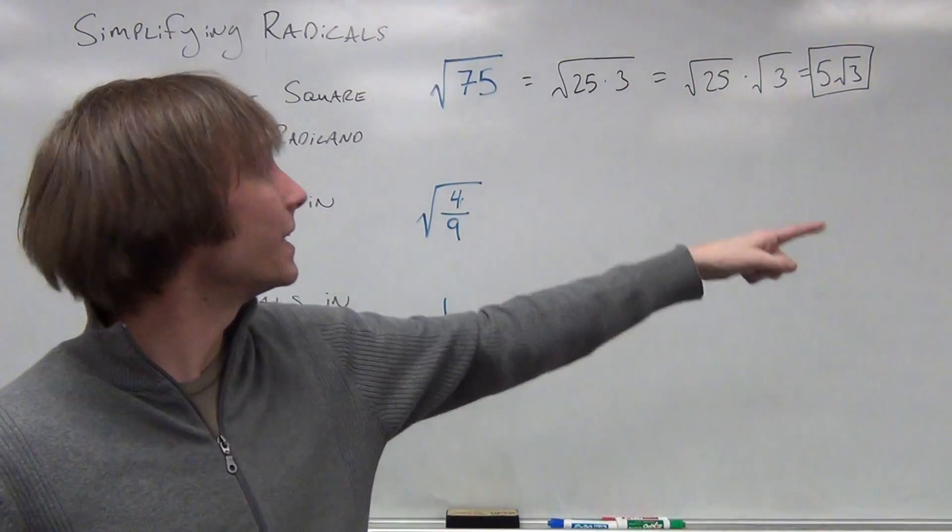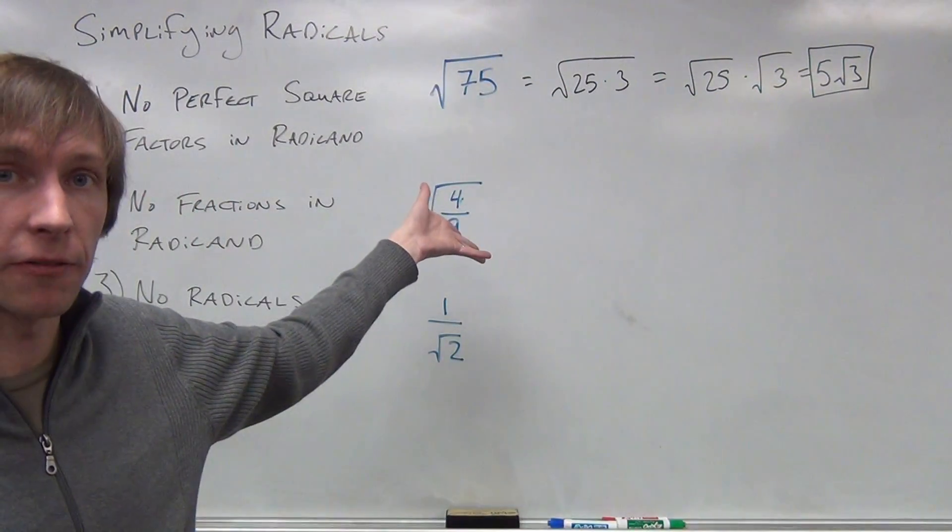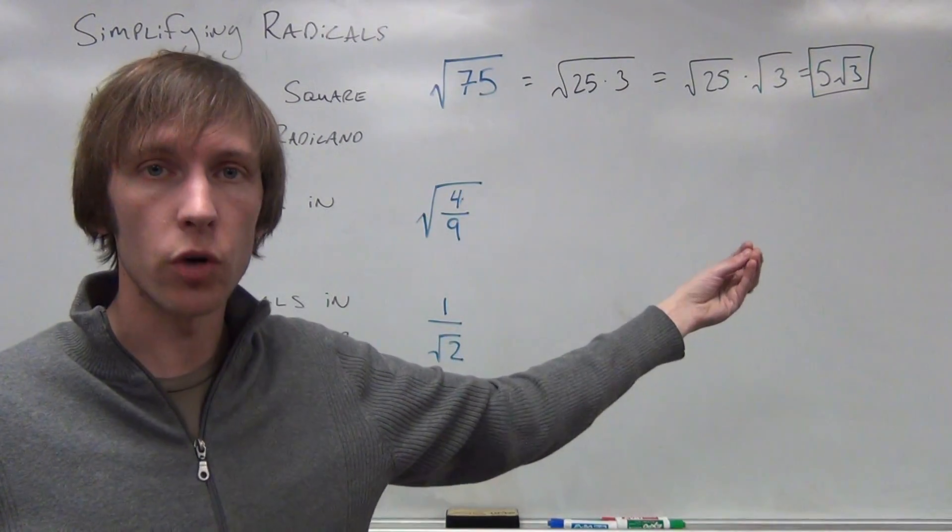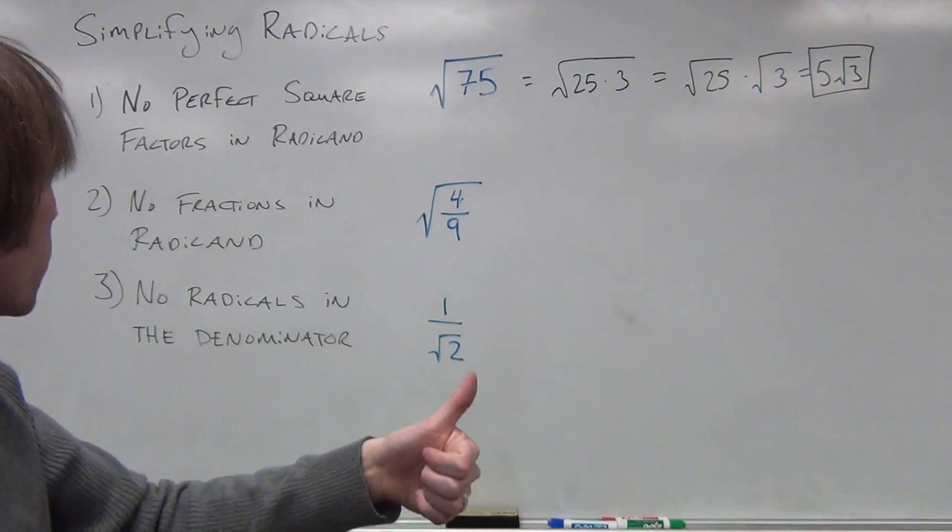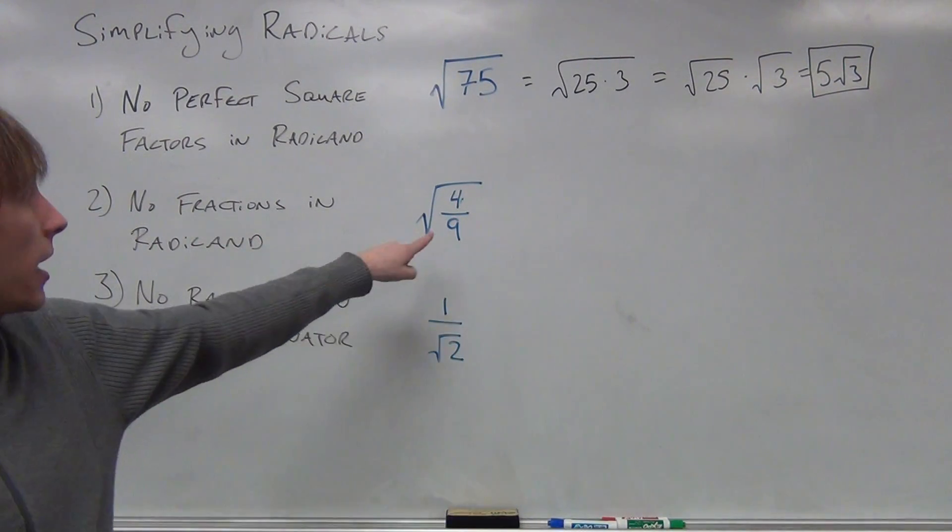So 5 radical 3 is equal to the square root of 75, but here we have smaller numbers to work with. This is going to make our algebraic process later on much easier for us. Rule number 2, no fractions in the radicand.